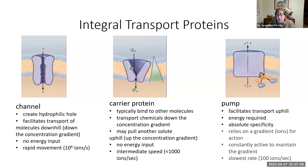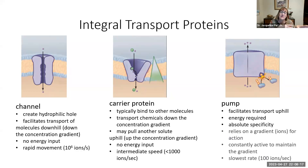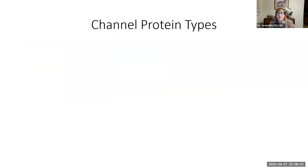The third type is called a pump, and this only does uphill transport, so energy is always required. Each pump is very specific for only one ion. In order to maintain the gradient it has to be active 24/7. This is by far the slowest of the three types of transport proteins, at only about 100 ions per second.